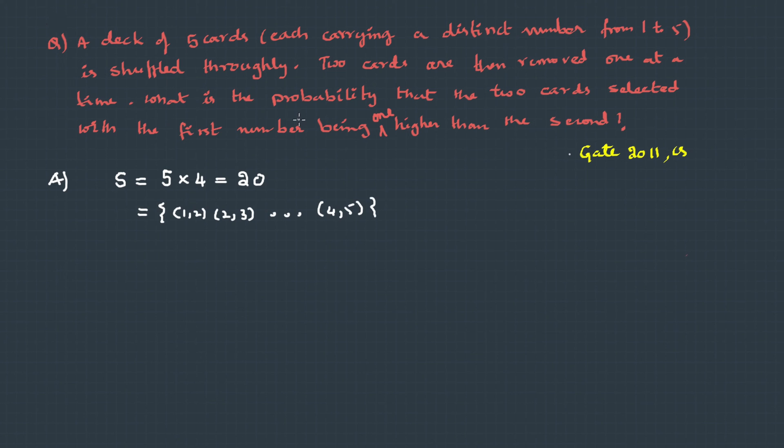Now let's define the event. The event is the two cards selected, with the first number being 1 higher than the second. 1 higher means the difference between the two numbers should be only 1. Now if we manually list the possibilities, we have only 4 possibilities. From this we can get the probability as number of favorable outcomes by total outcomes, that is 4 by 20, that's 1 by 5.